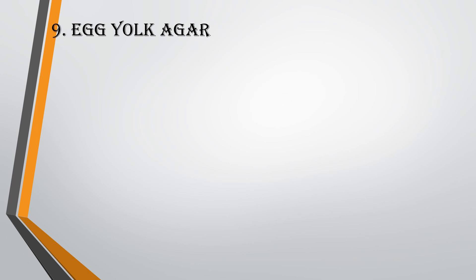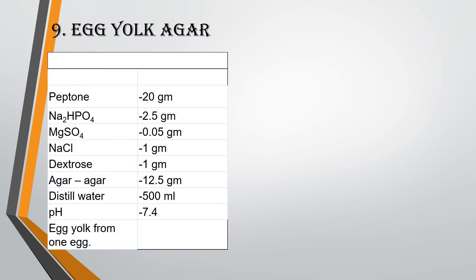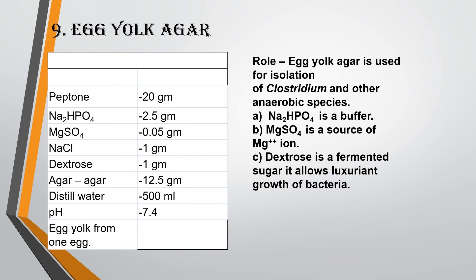The ninth medium is Egg Yolk Agar, prepared for 500 ml. Components are: Peptone 20 g, Na2HPO4 2.5 g, MgSO4 0.05 g, NaCl 1 g, Dextrose 1 g, Agar Agar 12.5 g, Distilled Water 500 ml, pH 7.4, and egg yolk from 1 egg. Egg Yolk Agar is used for isolation of Clostridium and other anaerobic species. Na2HPO4 is a buffer, MgSO4 is a source of magnesium ions, and Dextrose is a fermented sugar that allows luxuriant growth of bacteria.